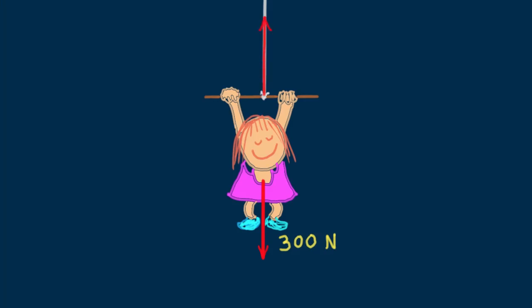Since she's at rest, the rope tension has gotta be 300 Newtons upward. So 300 Newtons upward and 300 Newtons downward produce a net force of how much? I hope you said zero. Nellie is in mechanical equilibrium.